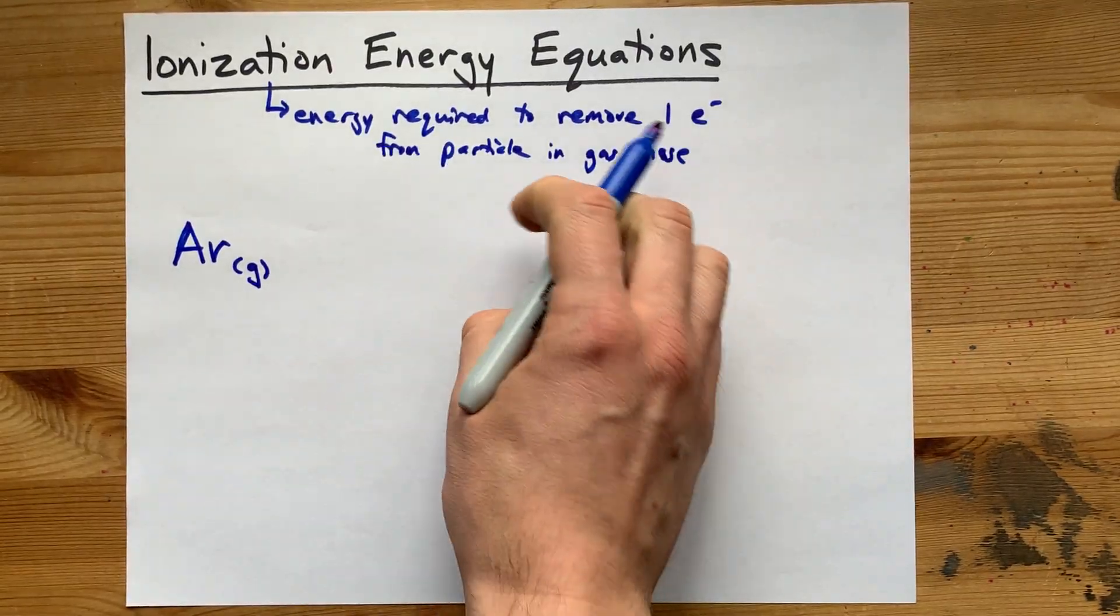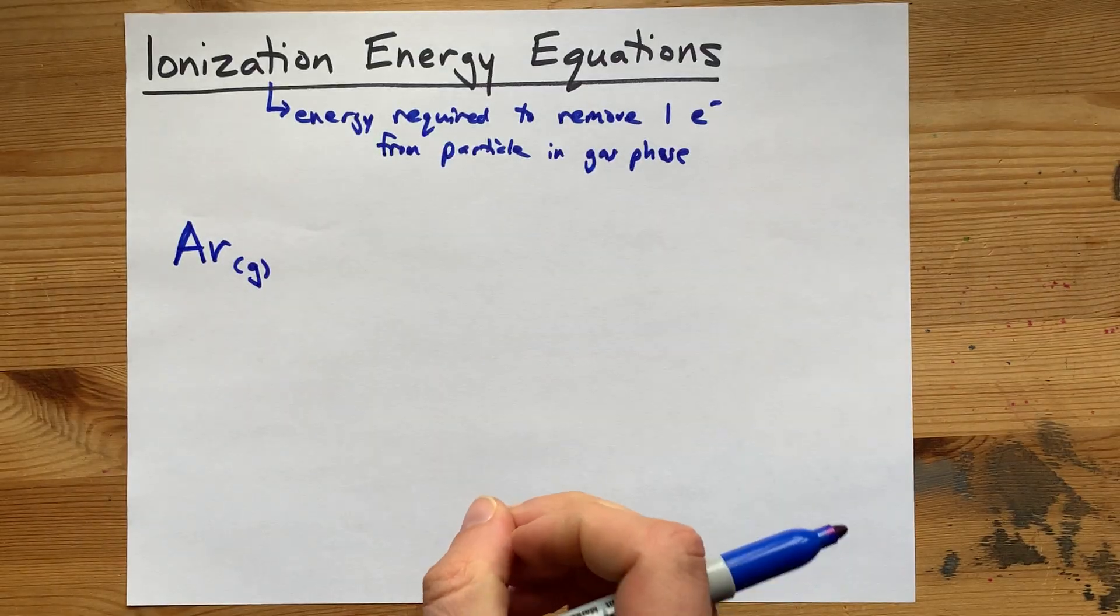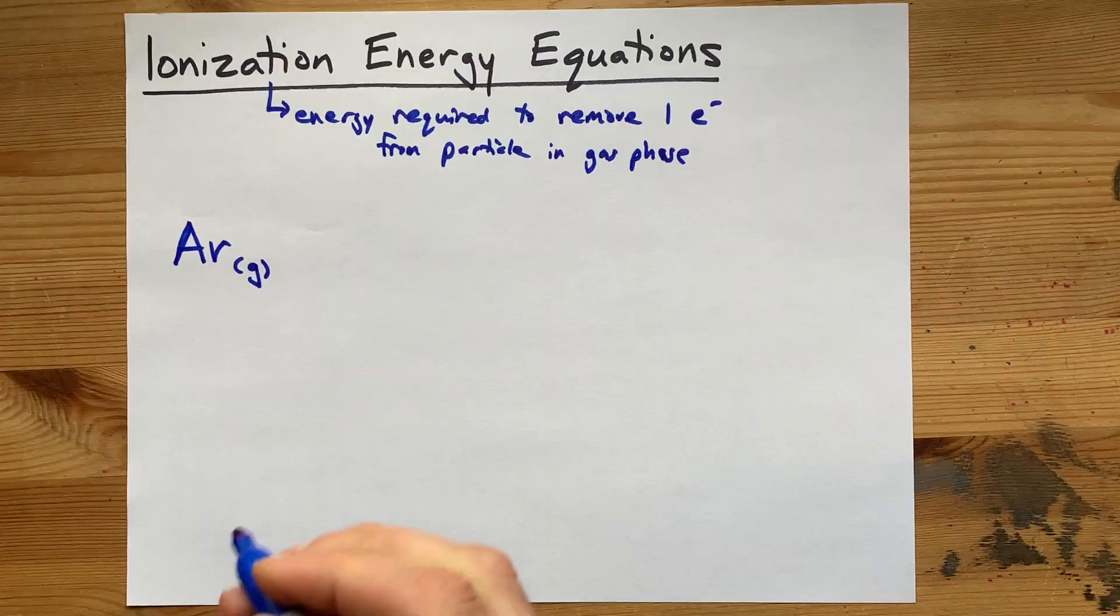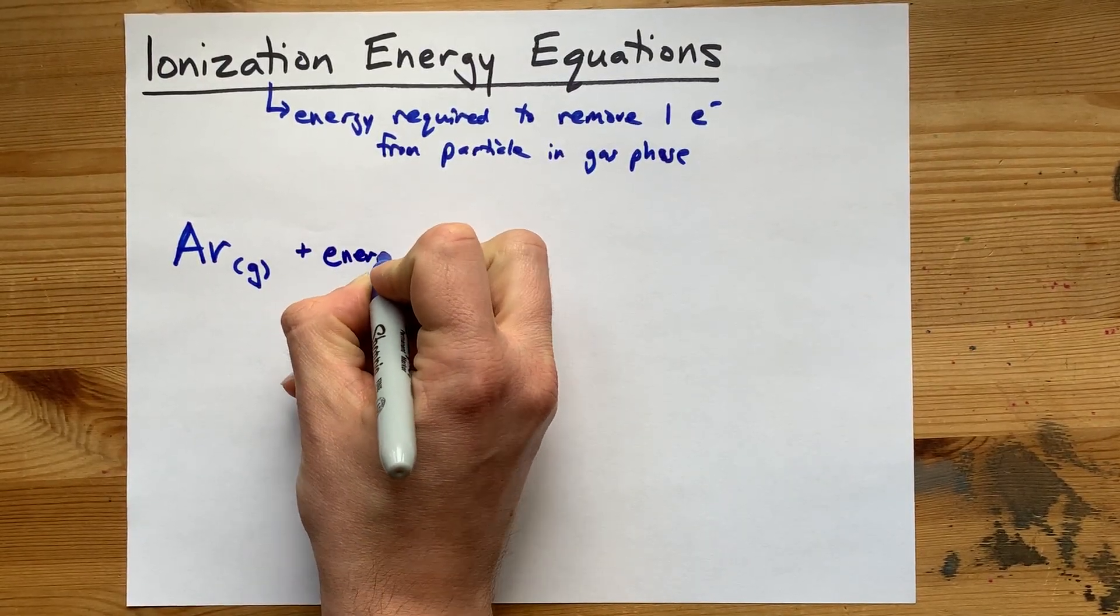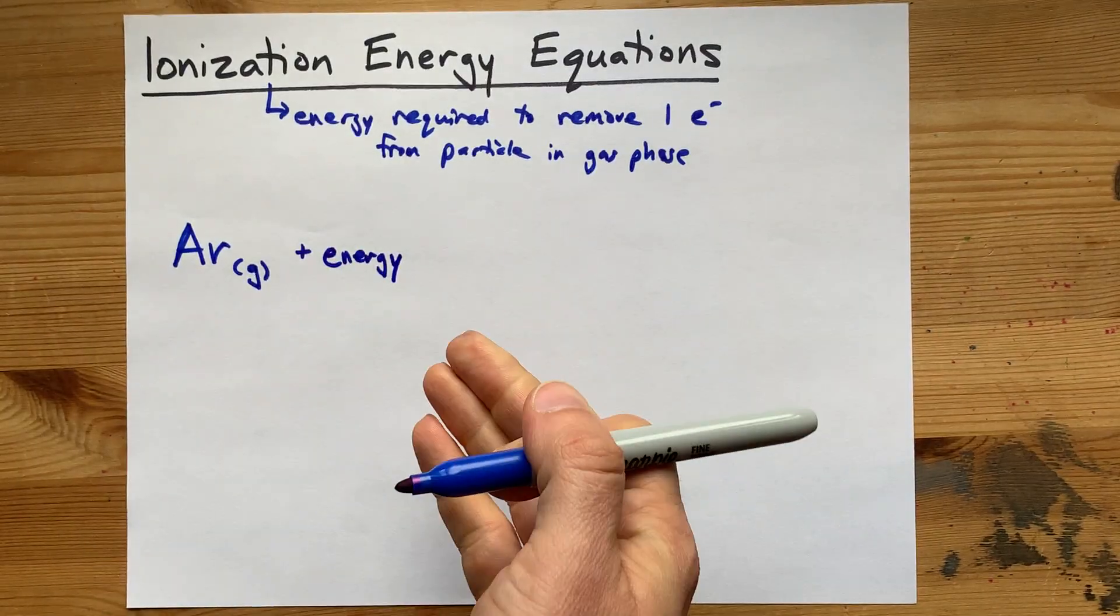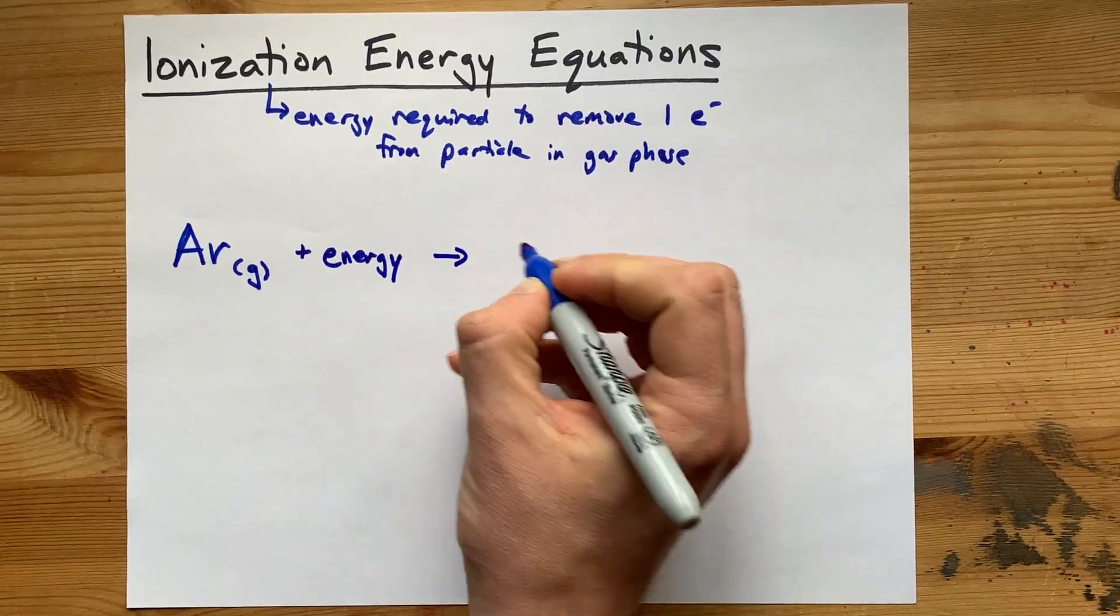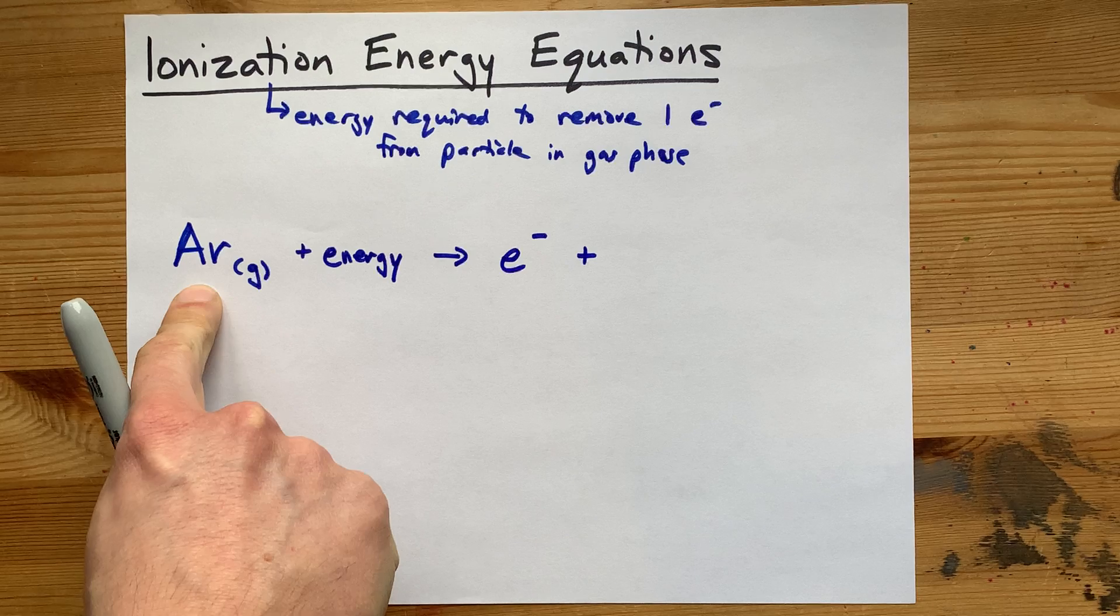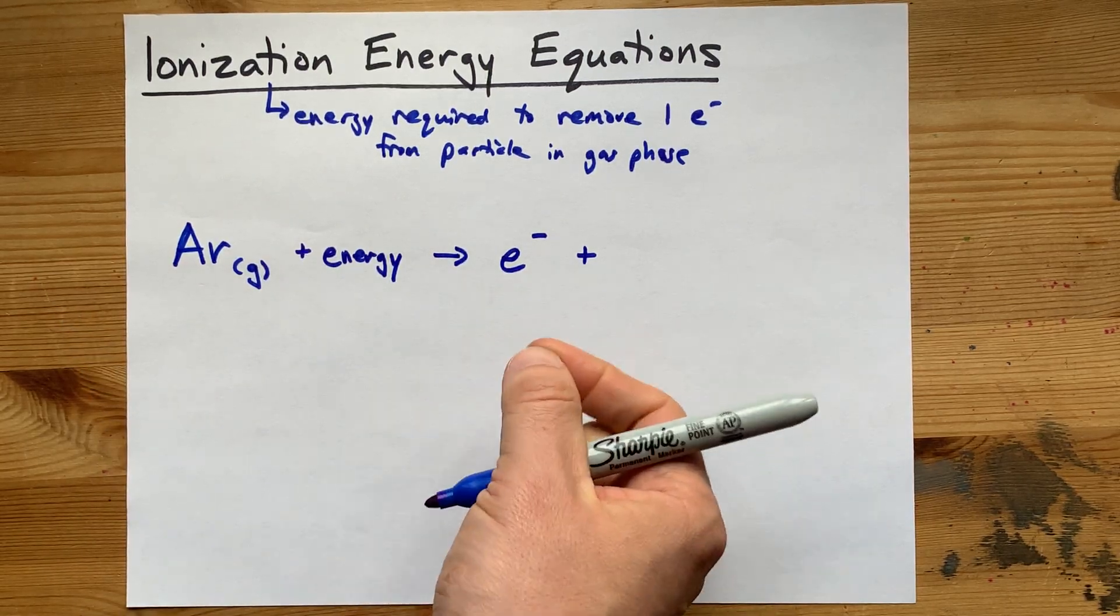We are going to remove an electron, which means the electron is a product. And we're going to have to put some energy in to pluck that electron out. So I'm going to write plus energy because energy has to go in to this system. And we're going to end up with an electron as well as this same argon without one of its electrons. What happens when you lose an electron?